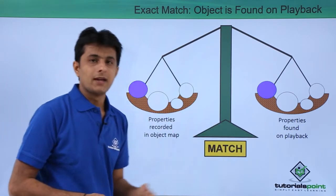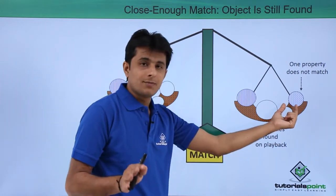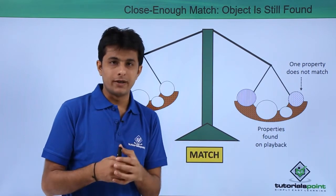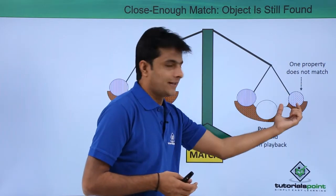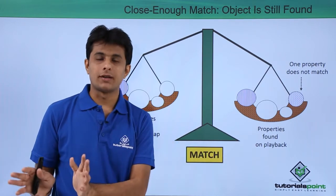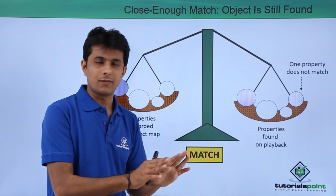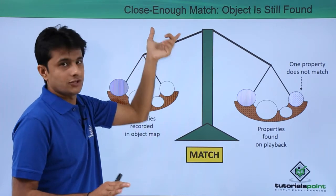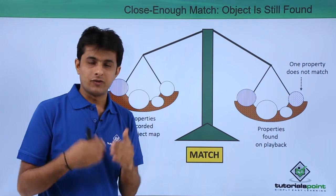Sometimes you might face a situation where one object property is not matching. It has been changed. As I said, developer after 15 days is giving me a new build where there are some properties which are not matching. For example, here you can say one property does not match. So what should RFT do? Should it execute, pass, or give me a warning? In this case, even if one property is not matching, the answer will be as object is still found - you can see a close enough match. That means no warning, no error message.